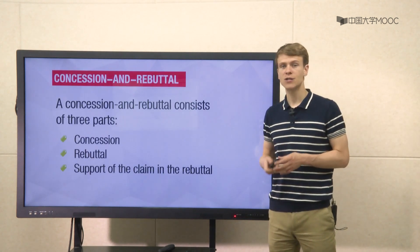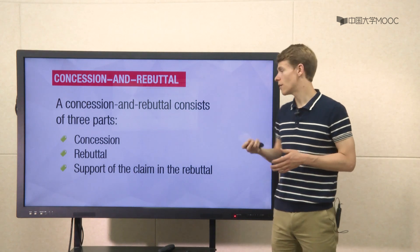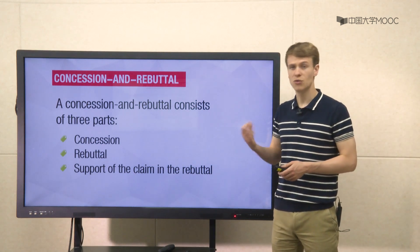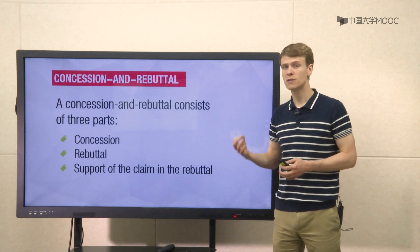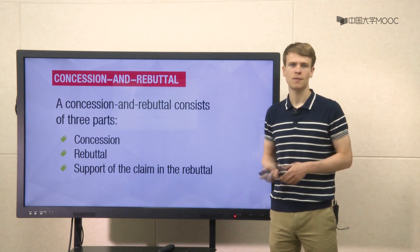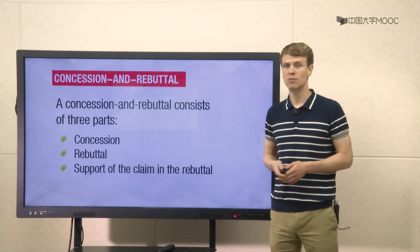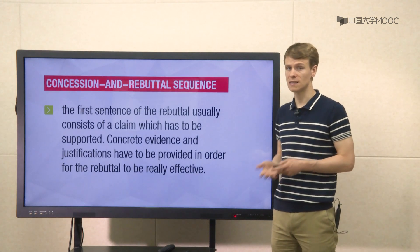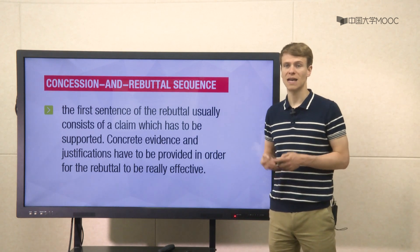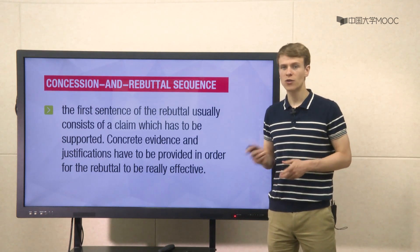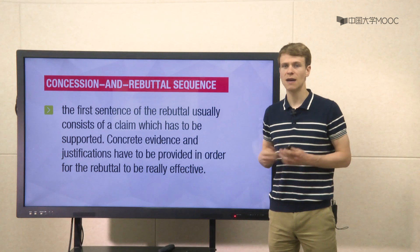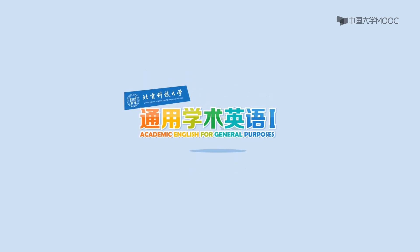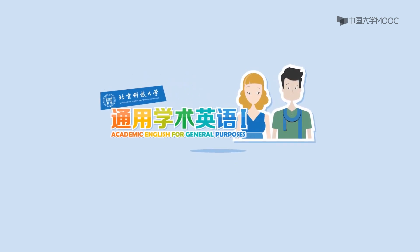Ultimately, a concession and rebuttal consists of three parts: the concession, the rebuttal, and then support of the claim in the rebuttal. In a concession and rebuttal sequence, the first sentence of the rebuttal usually consists of a claim, which has to be supported. Concrete evidence and justifications have to be provided in order for the rebuttal to be really effective.